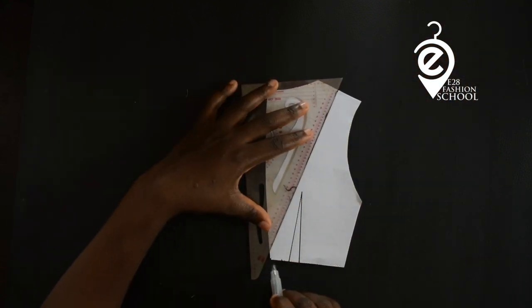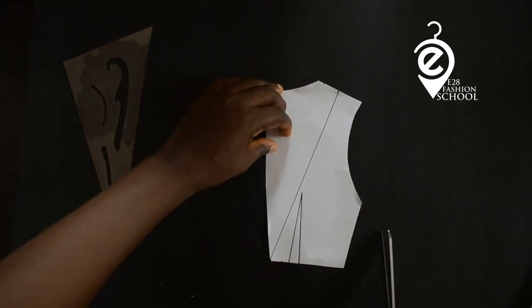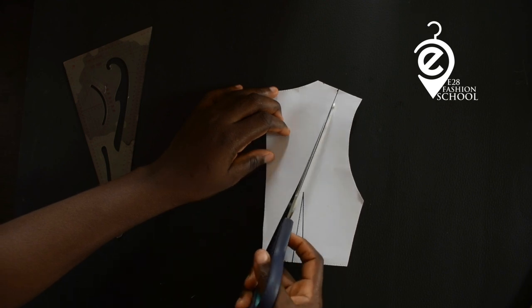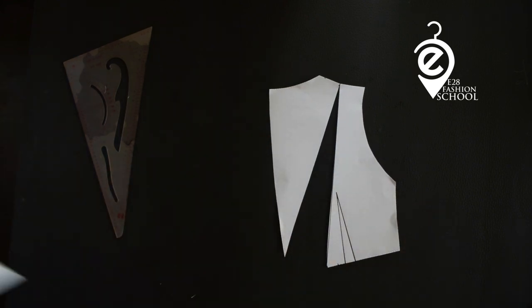Then you want to divide your shoulder by two, and connect with a straight line to the waist at the center back. So you have this. Now you cut, but just snap it a bit.